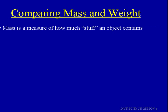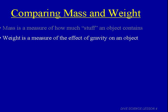Mass is a measure of how much stuff an object contains — how much material it has in it, how much stuff it contains. Weight is a measure of the effect of gravity on an object.